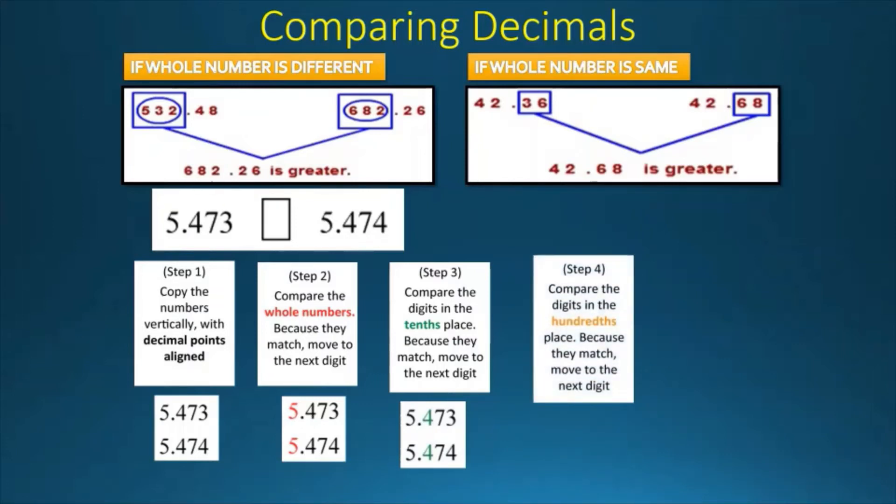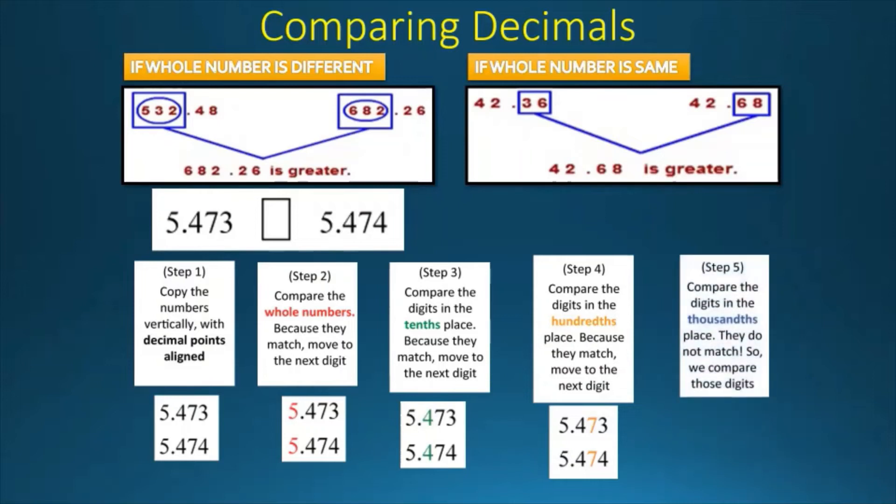Step 4. Compare the digits in hundredths place. Because they match, move to the next digit. And the 7 and 7 match, then move to the next digit. The last and final step is to compare the digits in the thousandths place, as these do not match.